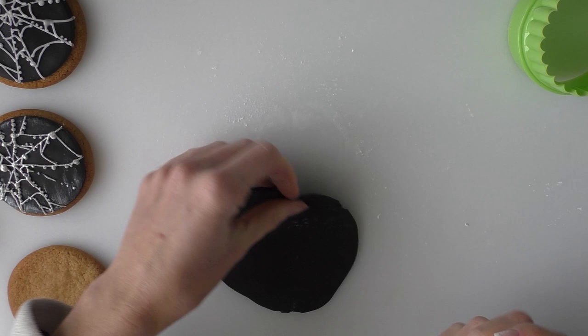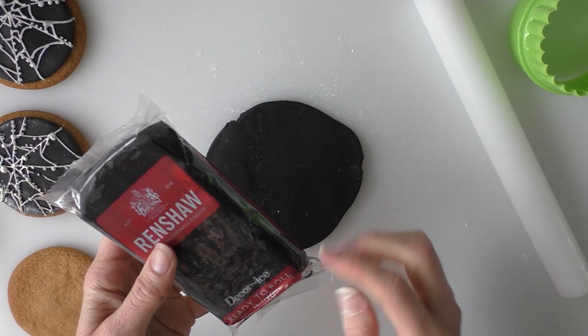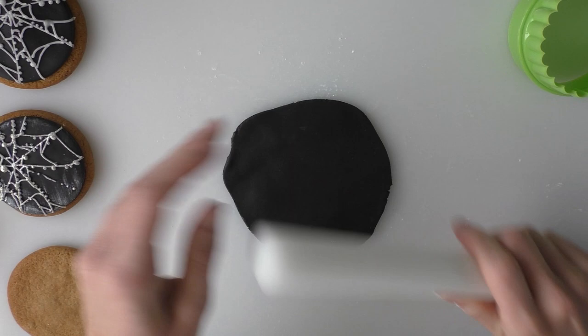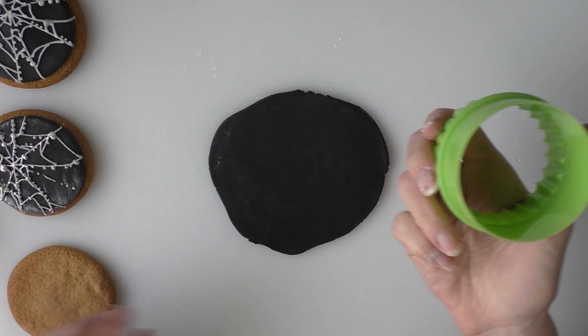Now I've bought the black fondant ready dyed. So it just looks like this, the one that I've got. So we've got the Renshaws ready to roll jet black one. Saves me dyeing it myself. It's really difficult to dye it black yourself because you have to put so much food coloring in that it ends up really sticky.